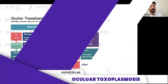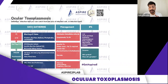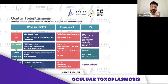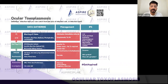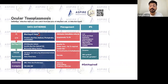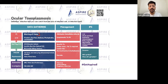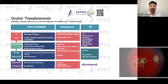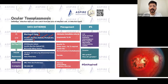Ocular toxoplasmosis — what is it? The presenting complaint is blurring of vision. Patients report blurring of vision, and there might be other symptoms as well, like floaters, eye pain, redness, photophobia, and watering in the eye.